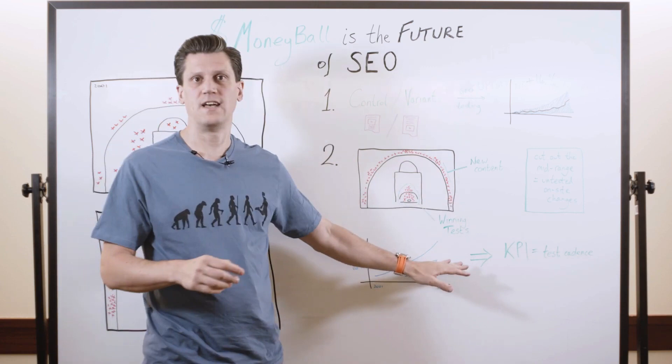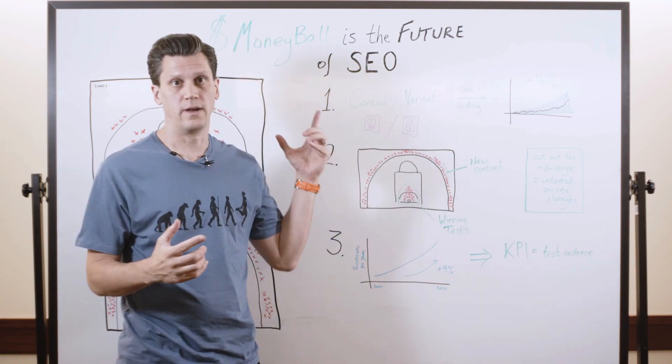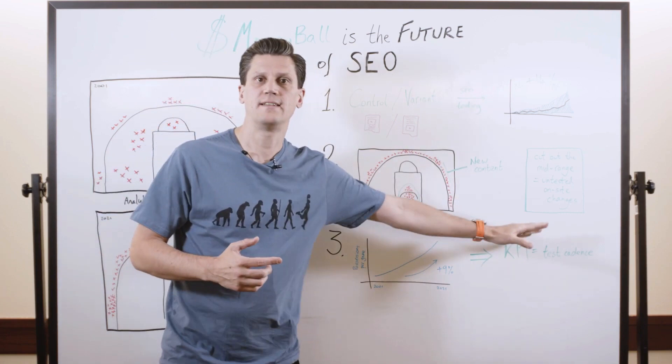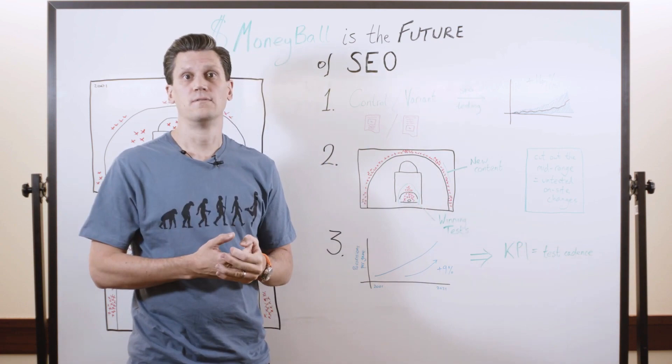And so the very highest performing teams that I see doing this kind of moneyball SEO approach, they are building their strategy of this kind of thing, new content and winning tests. And then they're setting KPIs around test cadence and making sure that they run more of those tests, they run them more quickly, and that they're driving performance that way.